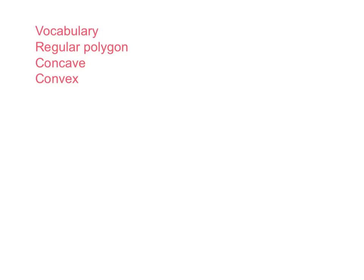The three vocabulary words to note are: regular polygon (which also leads to irregular polygon), concave, and convex.